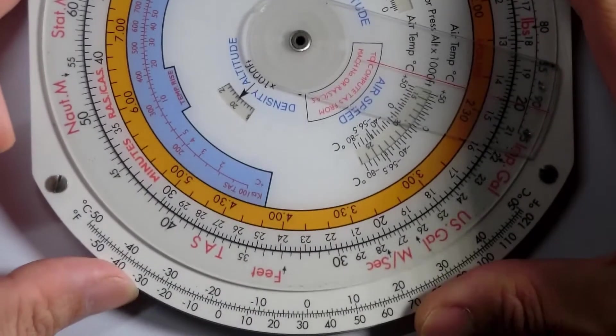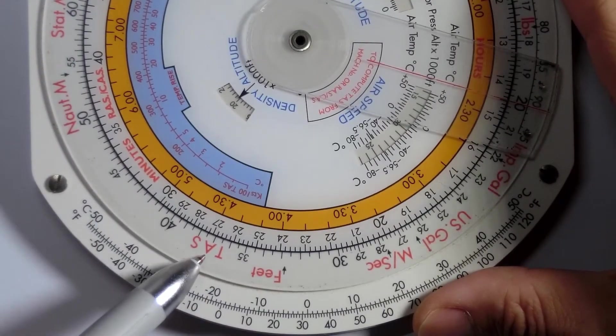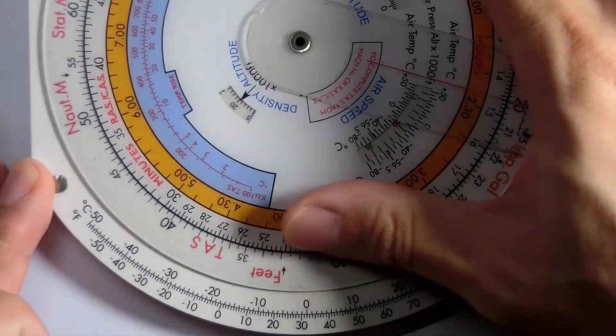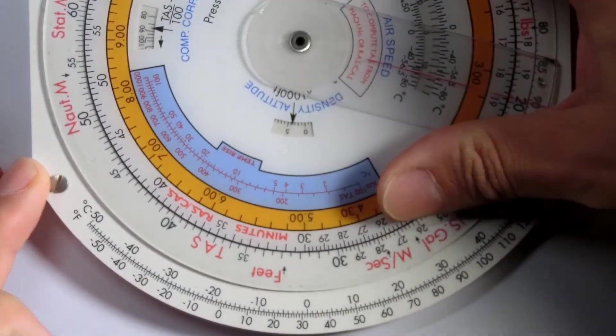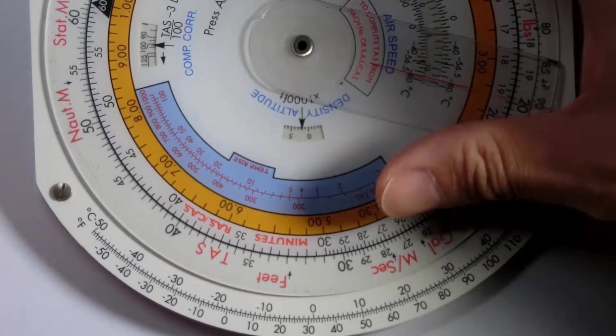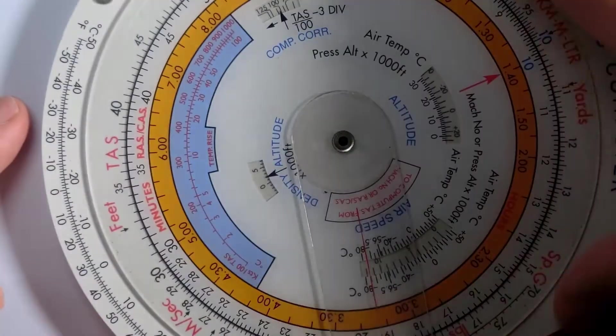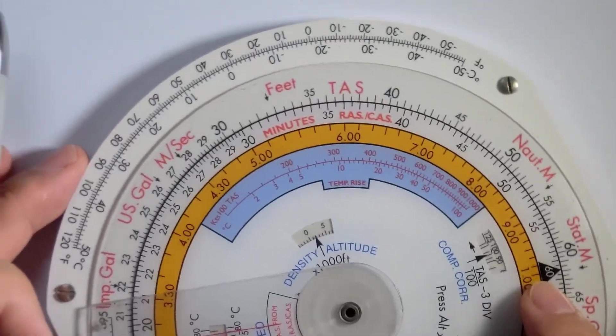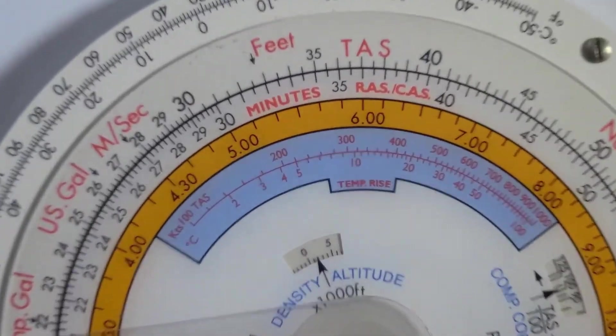On the outer scale, we have true airspeed. And on the inner scale, which rotates, you can see rectified and calibrated airspeed. I'm going to turn this around so that at least this portion of the CRP5 faces up and you can have a better look at that.